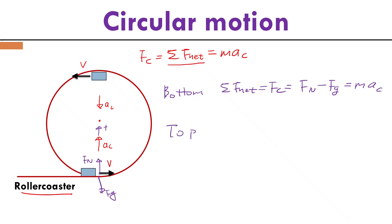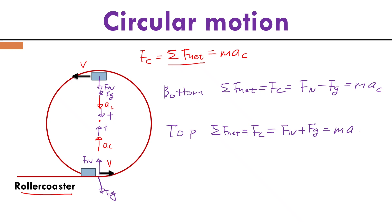For the top situation, normal force is going down and gravity is also going down. I choose going down as my positive direction since that points to the center. Writing Newton's second law, the net external force pointing to the center equals normal force plus gravity, which equals mass times centripetal acceleration.